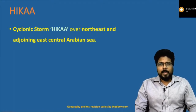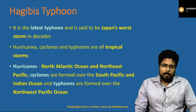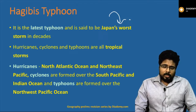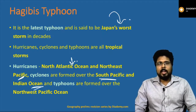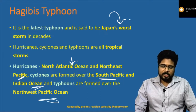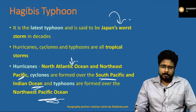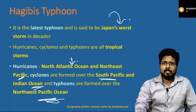Cyclonic storm Hika occurred over the northeastern and adjoining east-central Arabian Sea. Typhoon Hagibis occurred in Japan and is said to be Japan's worst storm in decades. To clarify terminology: hurricanes occur in the North Atlantic and Northeast Pacific; cyclones are generally formed over the Southern Pacific and Indian Oceans; typhoons are generally formed over the Northwest Pacific region. Cyclones are generally found in the Indian Ocean and Arabian Sea.